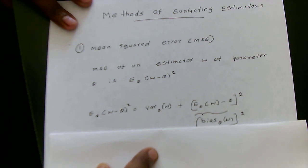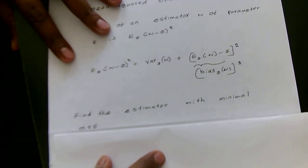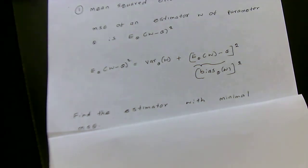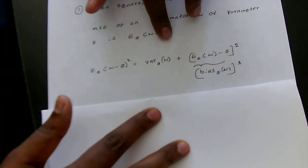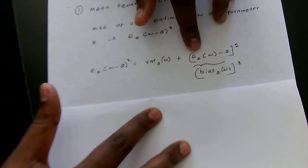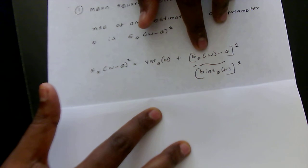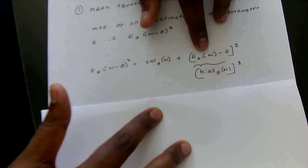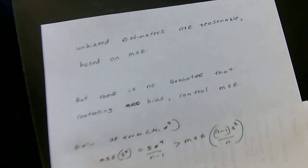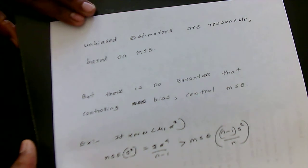Our goal is to find the estimator with the minimal MSE. That means if we want to evaluate our estimators based on MSE, we need to find the estimator that has the minimal MSE. Based on this equation, if an estimator is an unbiased estimator of the parameter theta, then the bias term will go to zero. Based on that logic, we can argue that unbiased estimators are reasonable based on MSE, because for unbiased estimators that second term goes to zero.